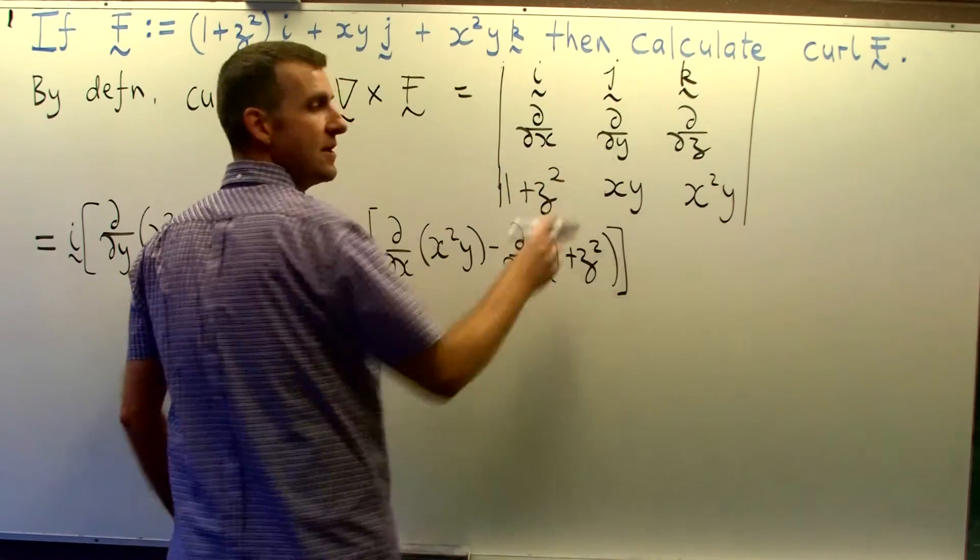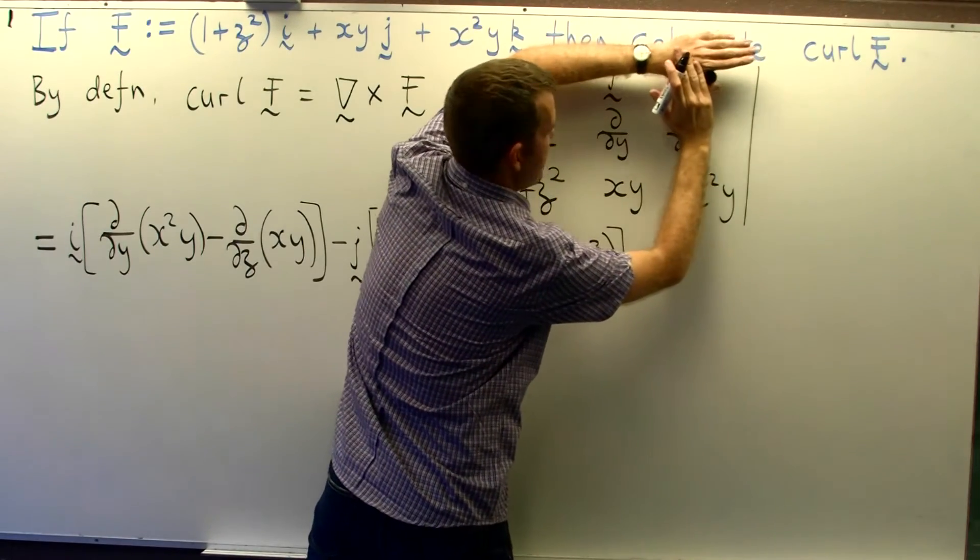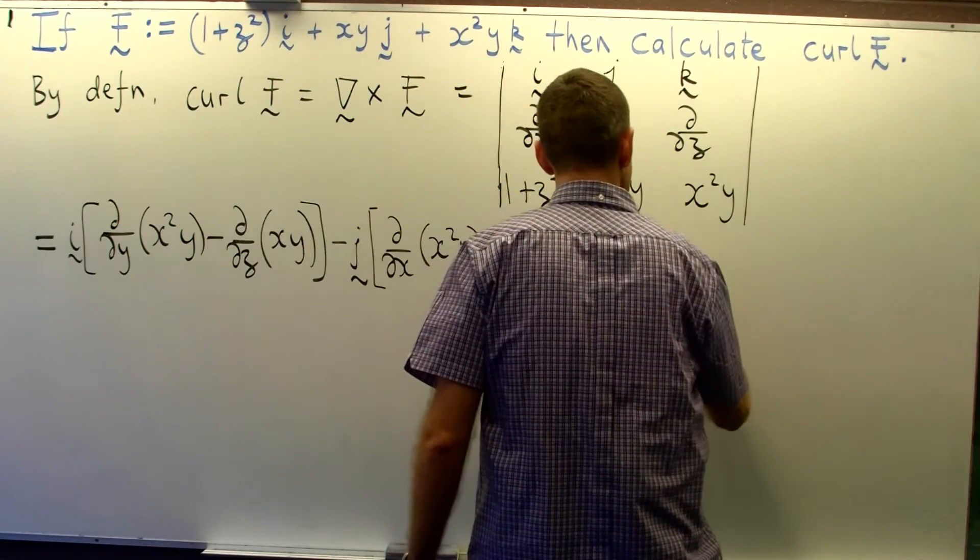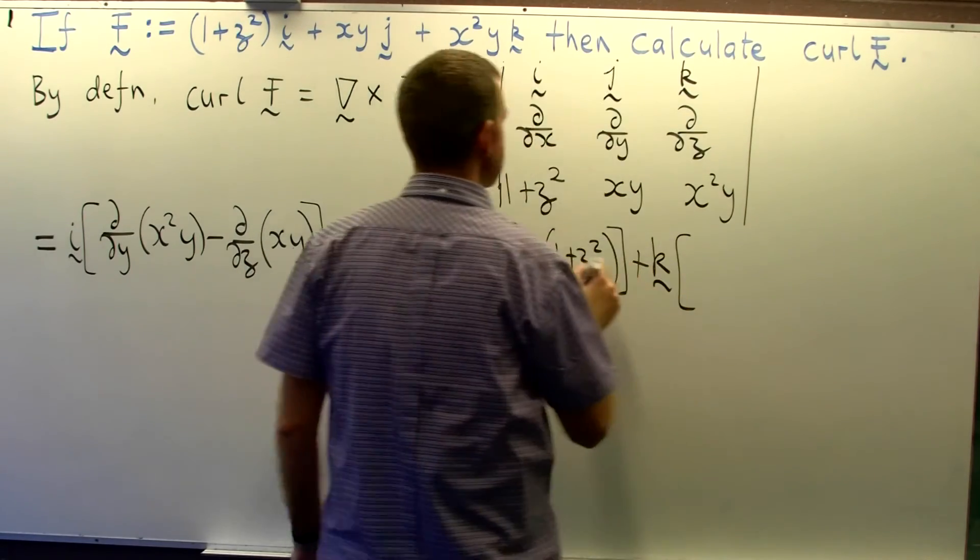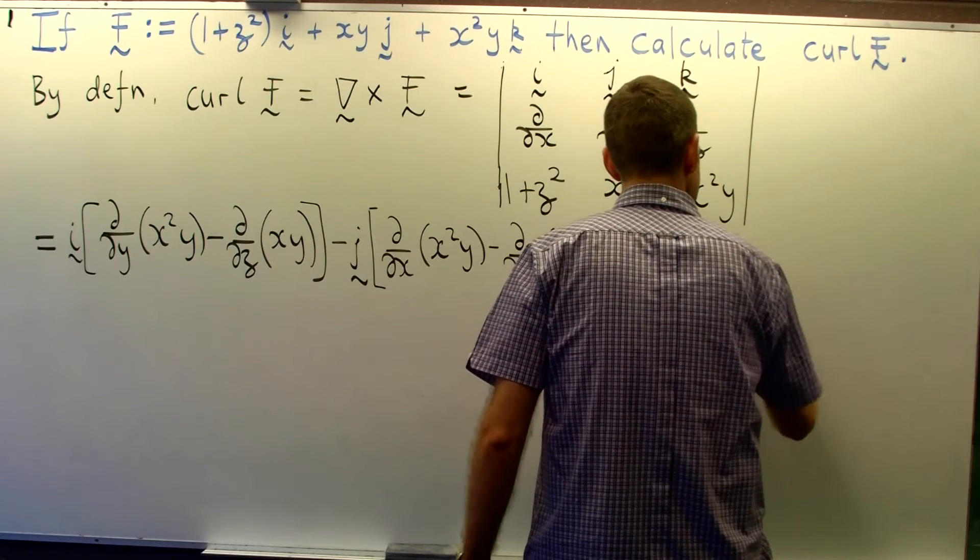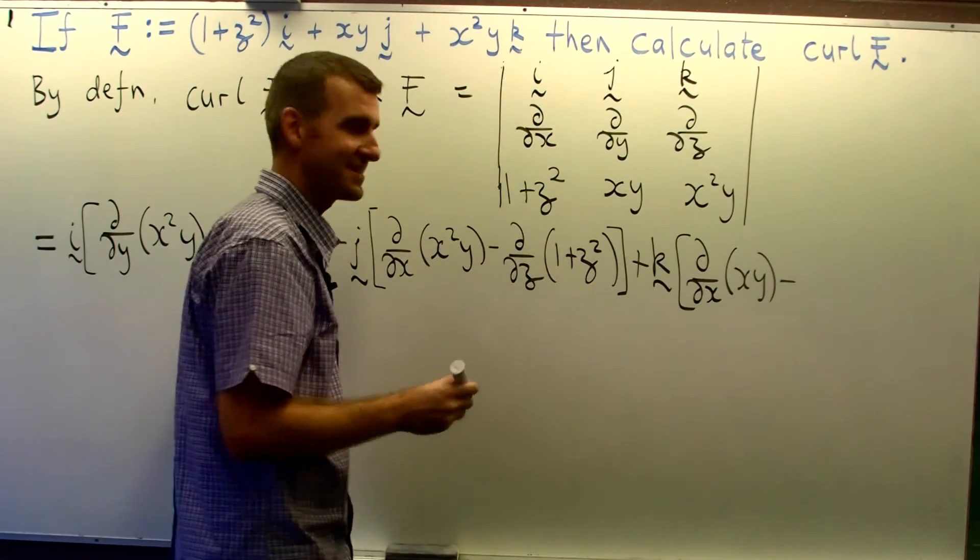Okay finally we get over to the k. k is in this row in this column and I multiply by the determinant of what's left. Okay so that's going to be something like d dx of xy minus d dy of 1 plus z squared.